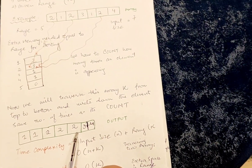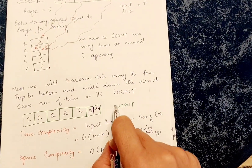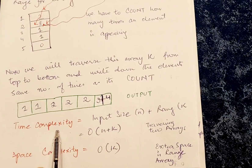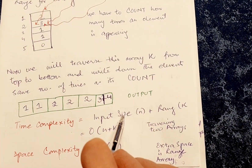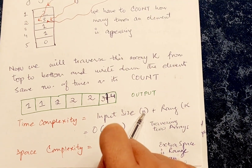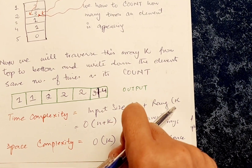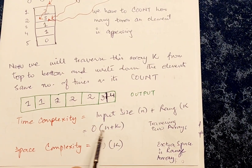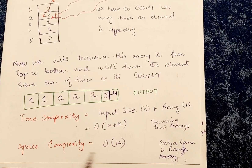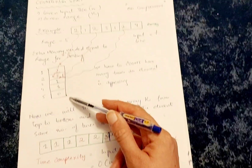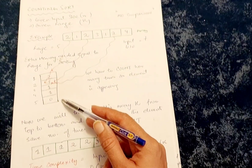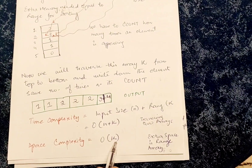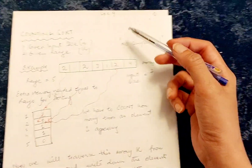In your exam you may be asked about time complexity and space complexity. For time complexity: first you traverse the input array of size n, then you traverse the range array of size k, so the time complexity is O(n + k). For space complexity: you needed extra space for the range array, which was not part of the original input. That extra memory is the space complexity, which equals the size of the range array, O(k).